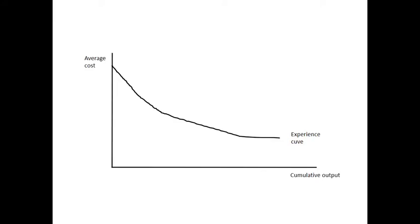It looks like this: we've got average cost on this axis, and it falls the more the total cumulative output increases. The more an organization has produced over time, the greater the fall in average cost.